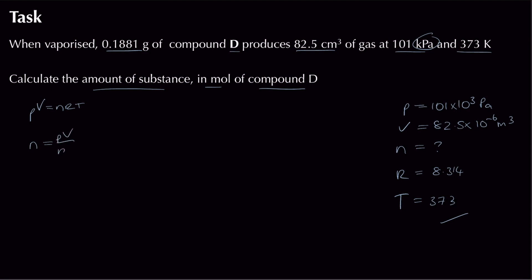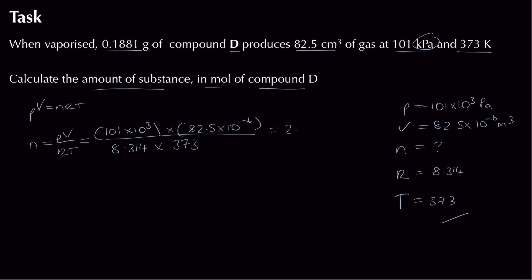Using PV = nRT, rearrange to n = PV/RT. Substituting: (101 × 10³ × 82.5 × 10⁻⁶) / (8.314 × 373). Putting that in the calculator gives, to three significant figures, 2.69 × 10⁻³ moles.